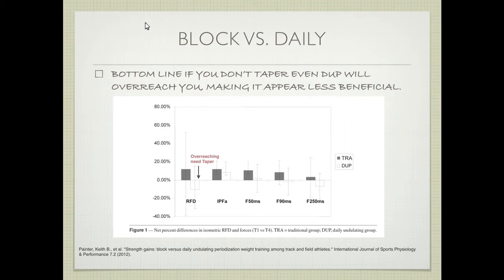We again see this with rate of force development. It goes up in the traditional blocked periodization group, and it actually goes down in the daily undulating periodization group — a clear overreaching effect.